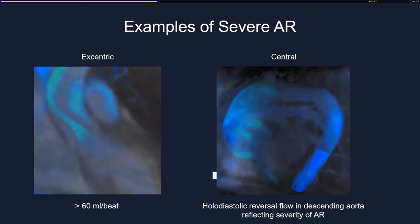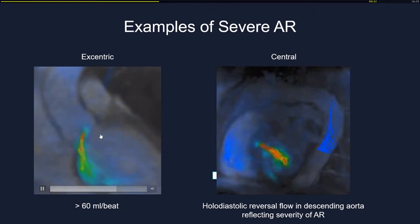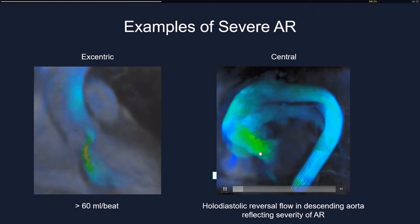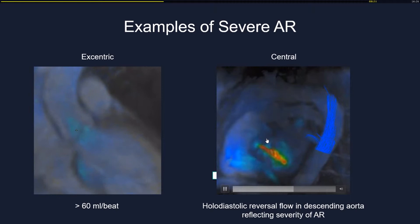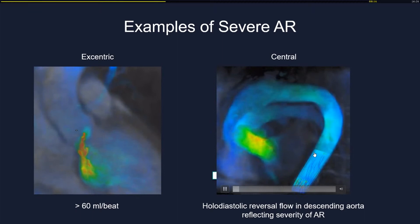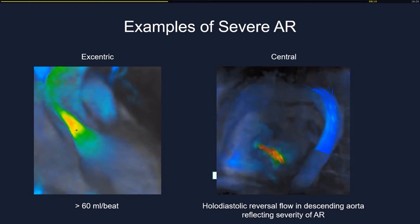Two examples are shown: one eccentric severe regurgitation due to valve prolapse, and one central regurgitation due to aortic root dilatation. As also shown by Rashid, a holodiastolic reversal flow in the descending aorta is visible — an indirect sign reflecting the severity of aortic regurgitation.